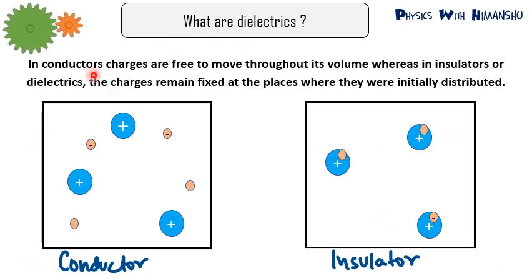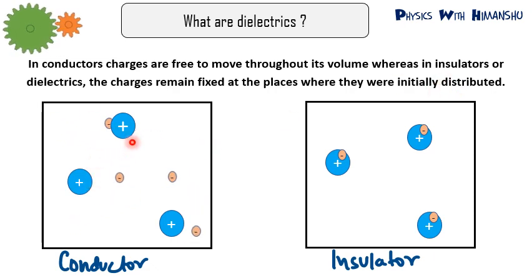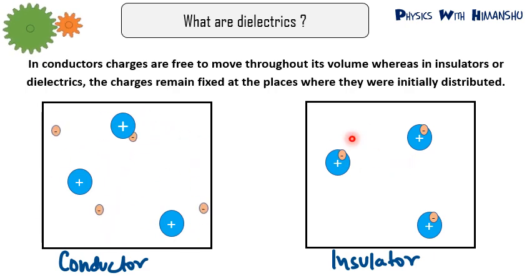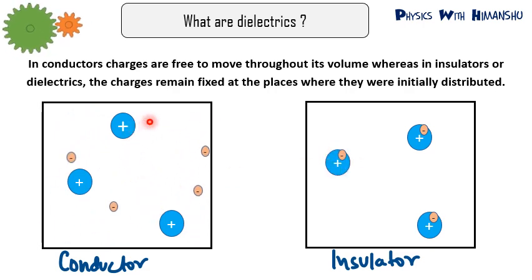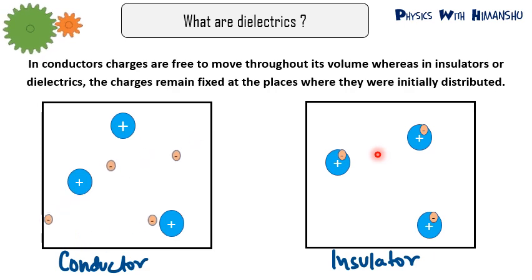What are dielectrics? In conductors, charges are free to move throughout the volume. In insulators or dielectrics, the charges remain fixed at the places where they were initially distributed. In conductors, charges can flow easily, but in insulators or dielectrics, charges are not free to move — they are bound inside the atom. So insulators or dielectrics are substances in which there are no free charges.